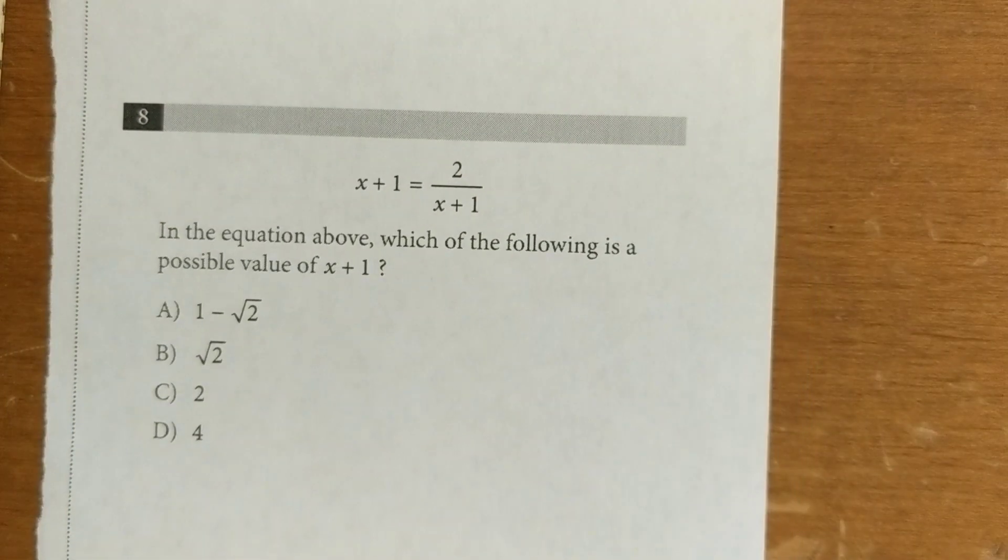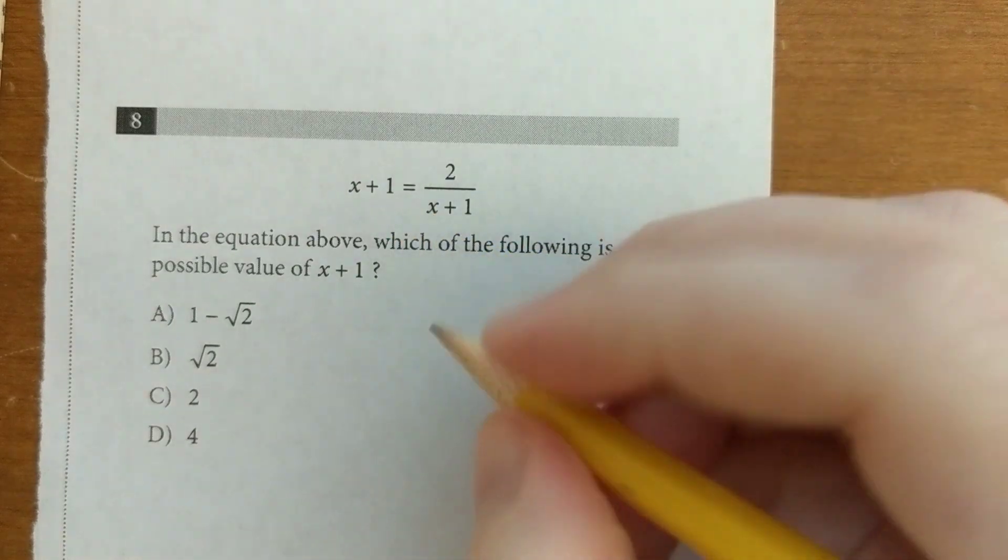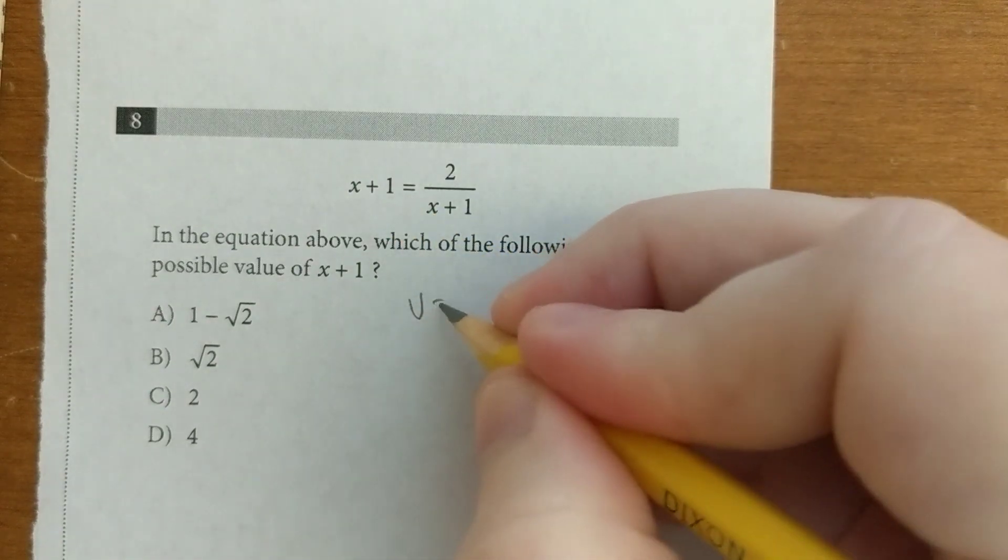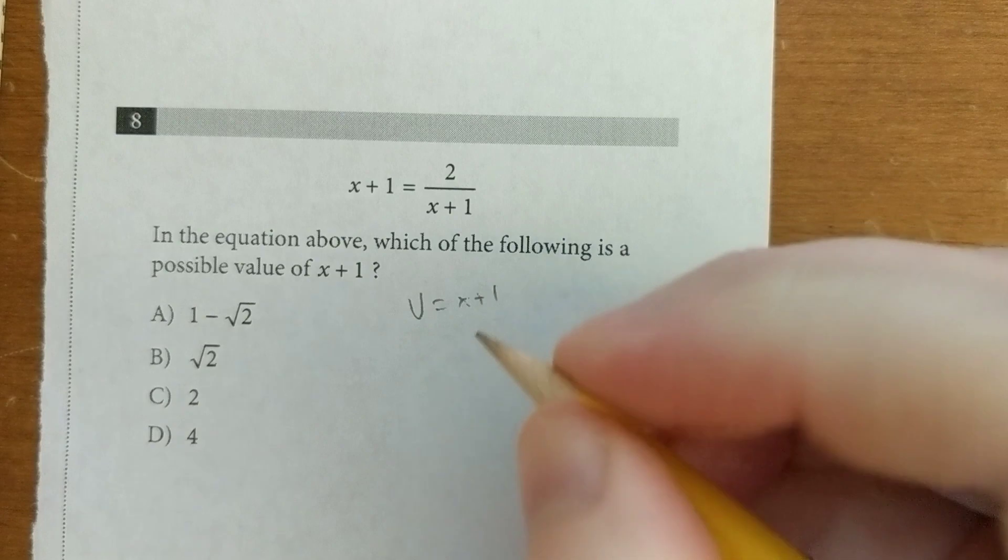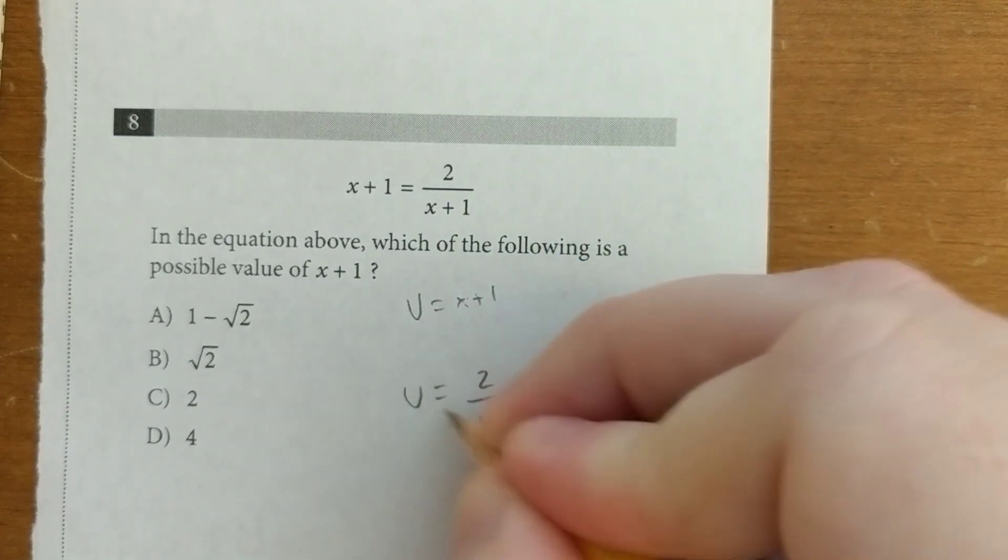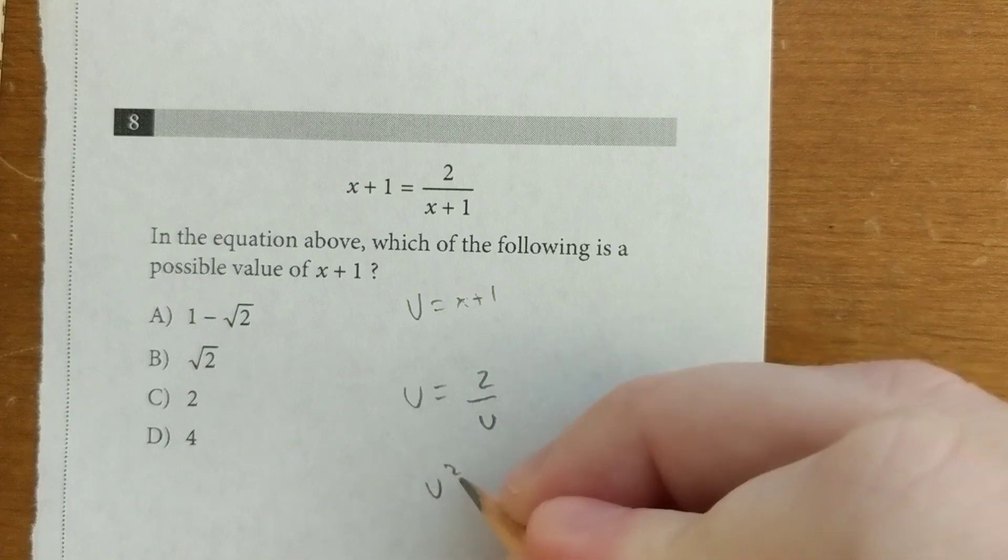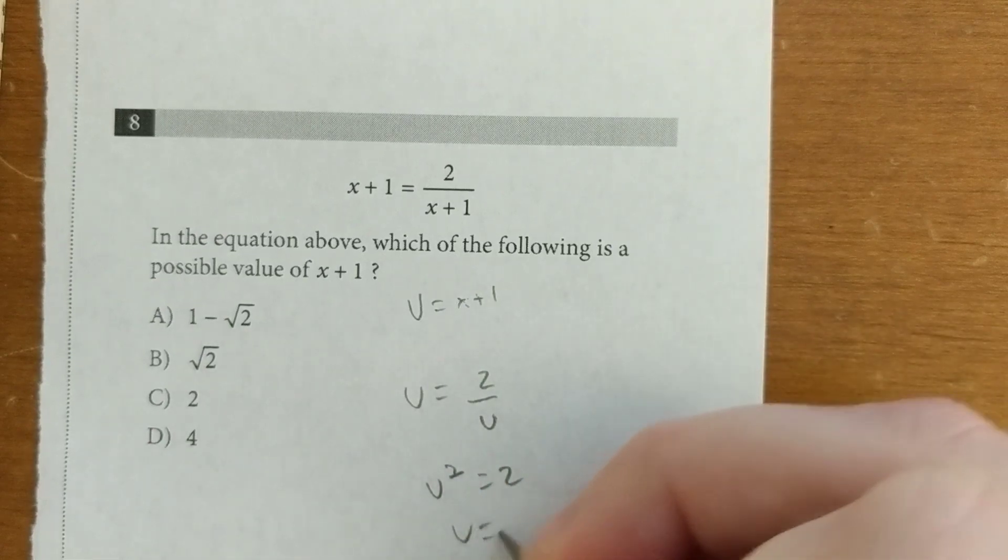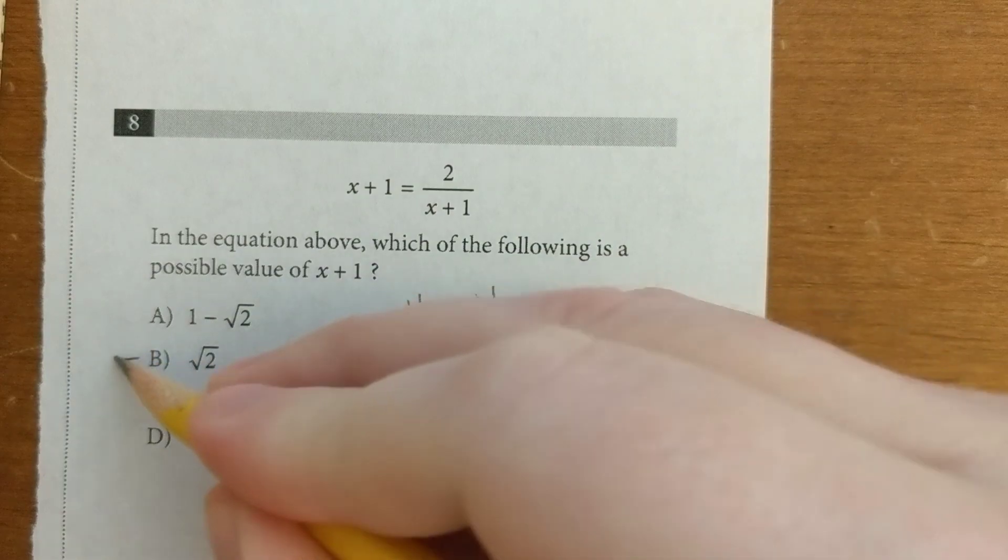Okay. One more. You might be tempted to cross multiply, but before you do, you should replace the x plus 1 with a u. Because then you'll get u equals 2 over u. When you multiply, you'll get u squared equals 2. That means u equals the square root of 2. And that's b.